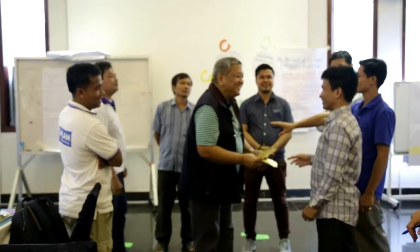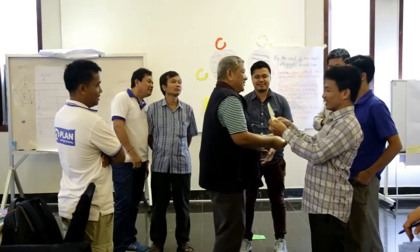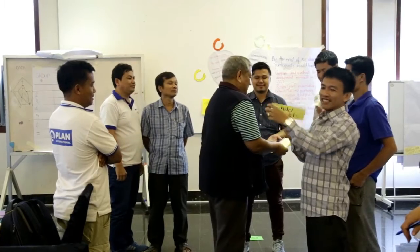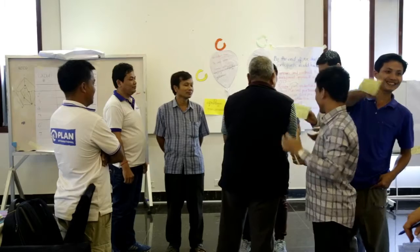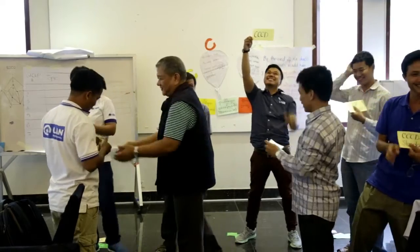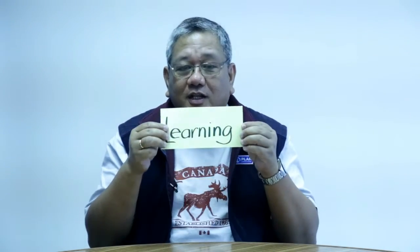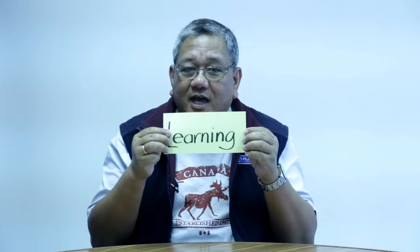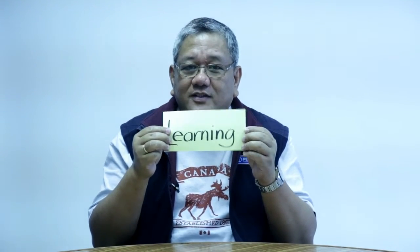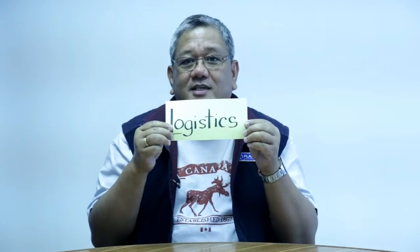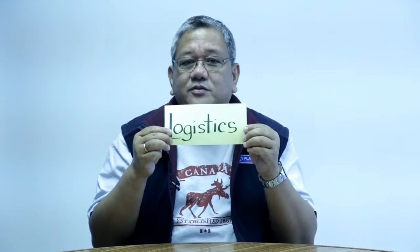I would like to structure what a great facilitator does in terms of the three Ls. These were taken from some of the publications from an organization called Onlinement. The first L focuses on the learners, meaning the participants themselves. The second focuses on the learning, meaning the design of the training or the facilitated activity. And the third L focuses on the logistics — the materials that we need to use, the venue, and others.